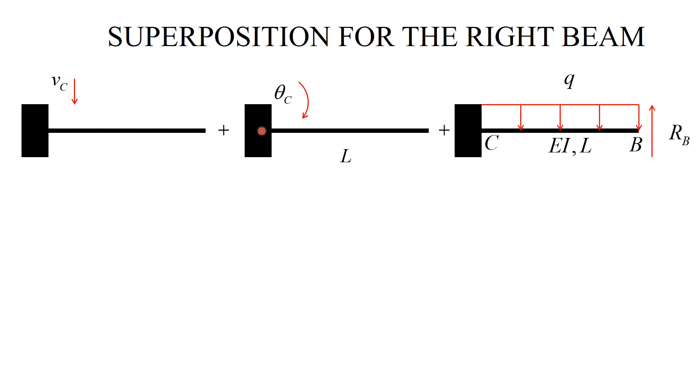I observe that this beam translates at C and rotates at C. In a way, this is a cantilever beam with a special wall. This wall moves downward by V sub C and it rotates clockwise by theta C. In addition, this wall bends due to the distributed load Q and the reaction force R sub B. The deflection at B could be viewed as a superposition of four actions: the translation of the wall at C, the rotation of the wall at C, the bending action of the uniformly distributed load, and the bending action of the reaction force.